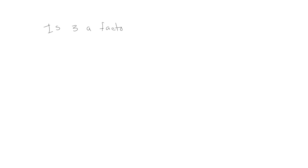Let's try a different one. Let's say we want to know: is 3 a factor of 54? One way we can do that is to divide 54 by 3. And if we get a whole number answer with no remainder, we'll know that both 3 and the quotient are factors of 54.